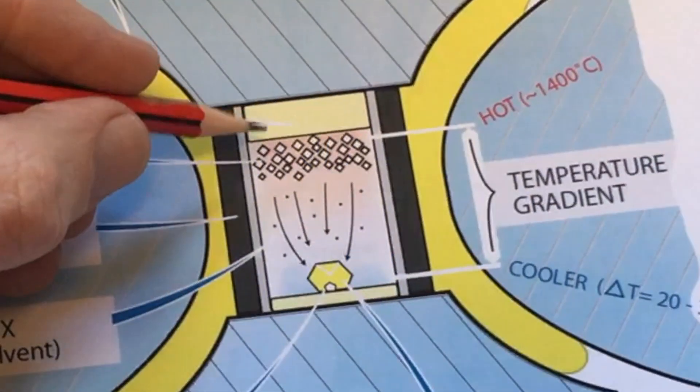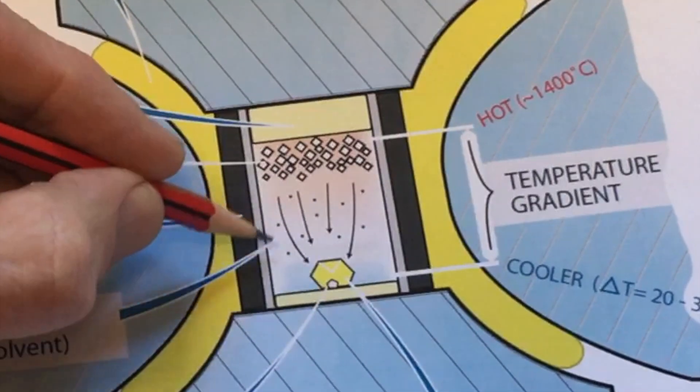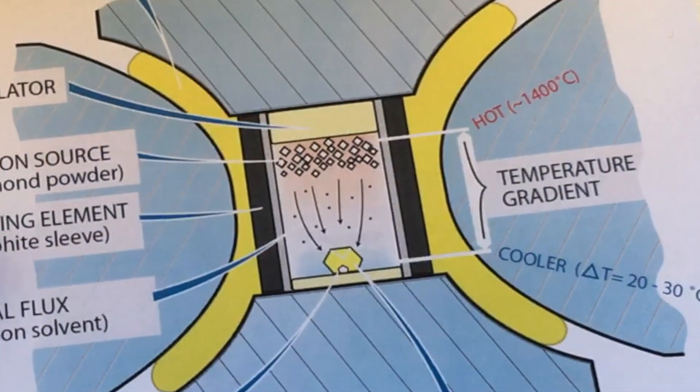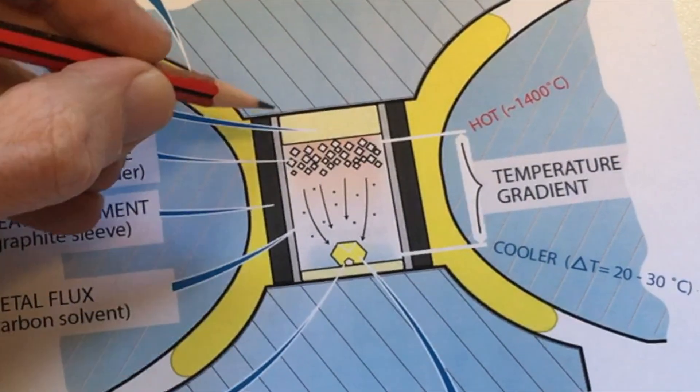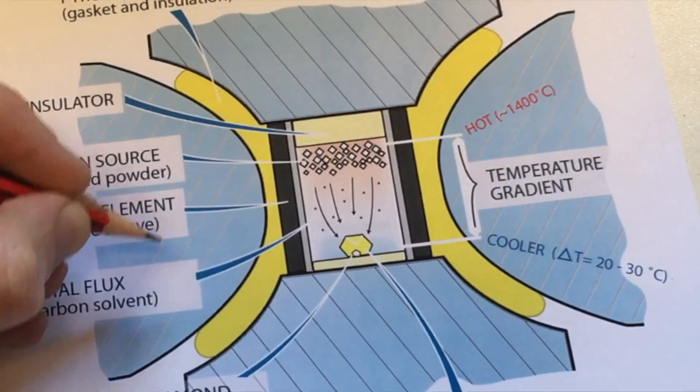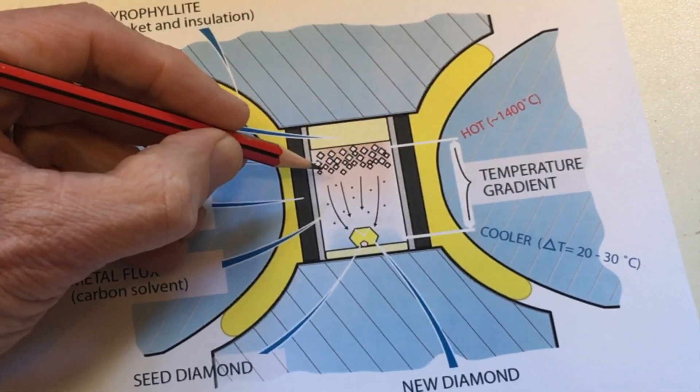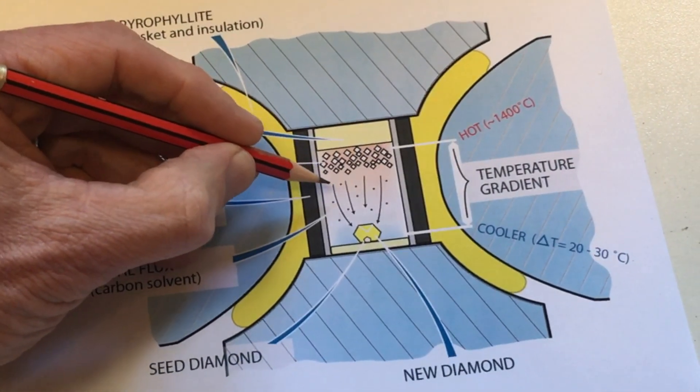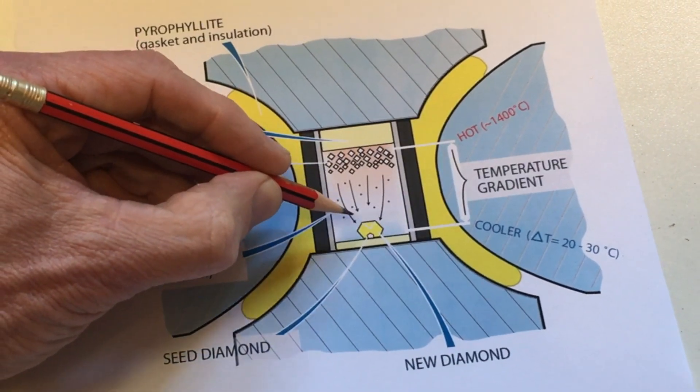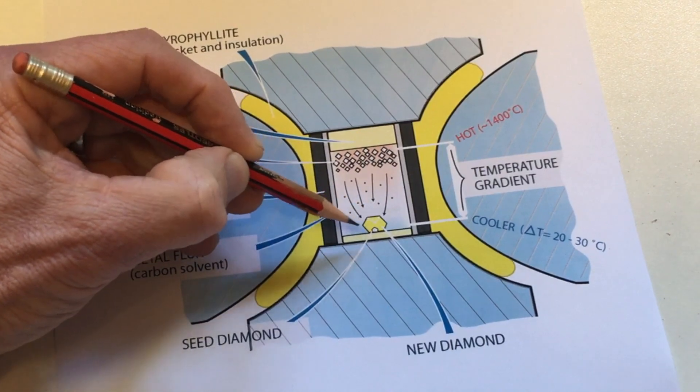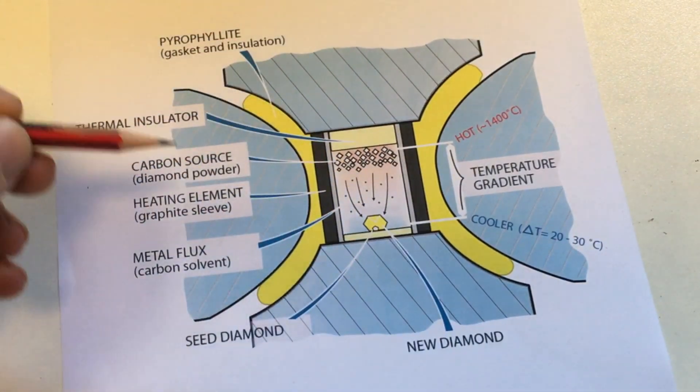The heart of HPHT growth is a reaction cell in which a seed crystal is surrounded by a metal. And near the top of the cell is a carbon source, usually diamond powder. At a temperature of about 1400 degrees, the metal, which is nickel, iron or cobalt, becomes molten and dissolves the diamond powder. With a temperature gradient, the dissolved carbon then precipitates onto the seed crystal and it grows.